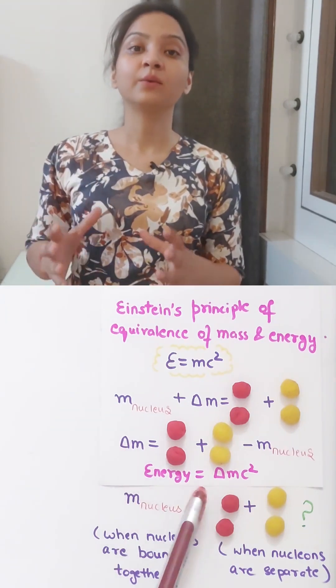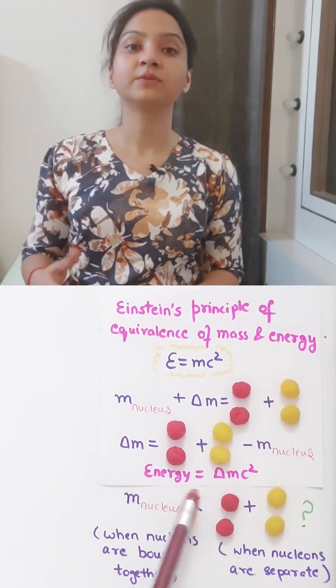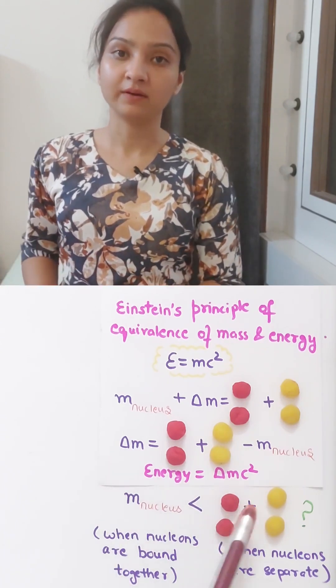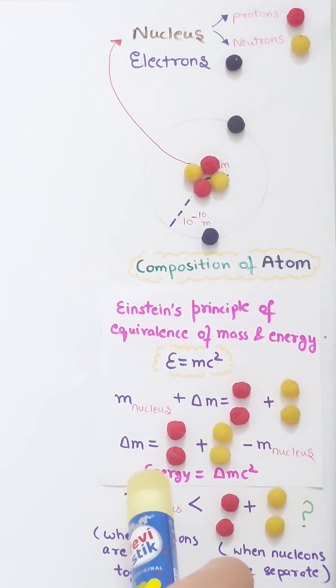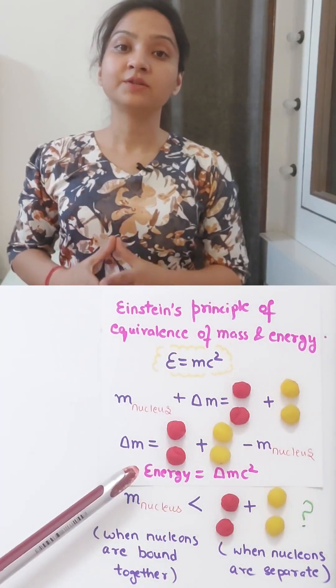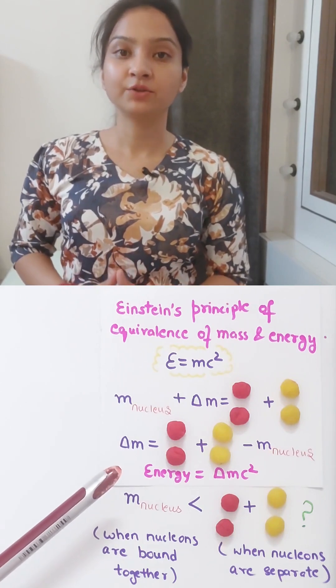This lost mass is converted into energy according to Einstein's equation: Energy is equal to delta M c squared. This energy acts as a glue to keep the nucleons together in a nucleus, so this energy is also called the binding energy of the nucleus.